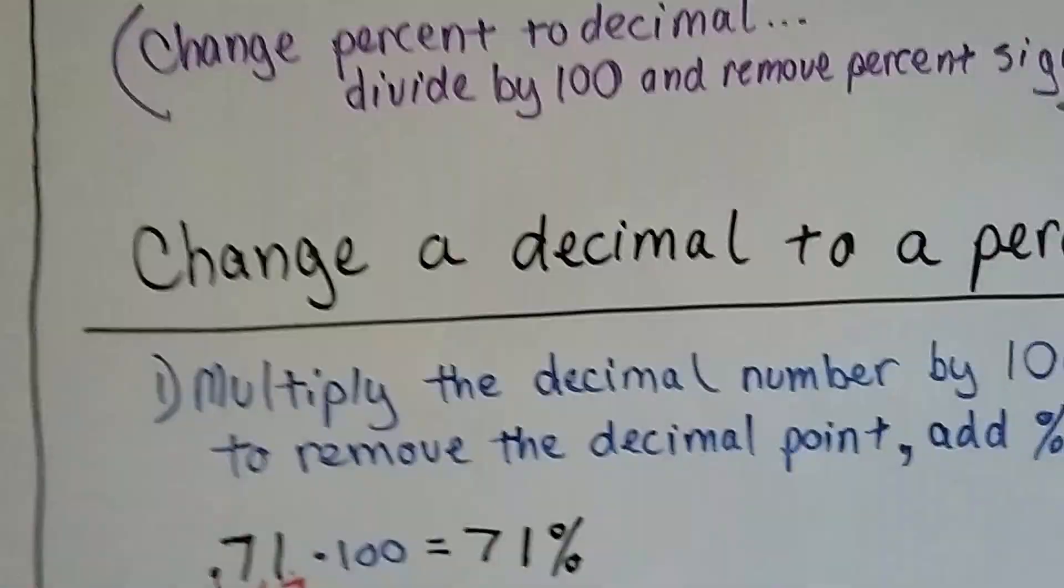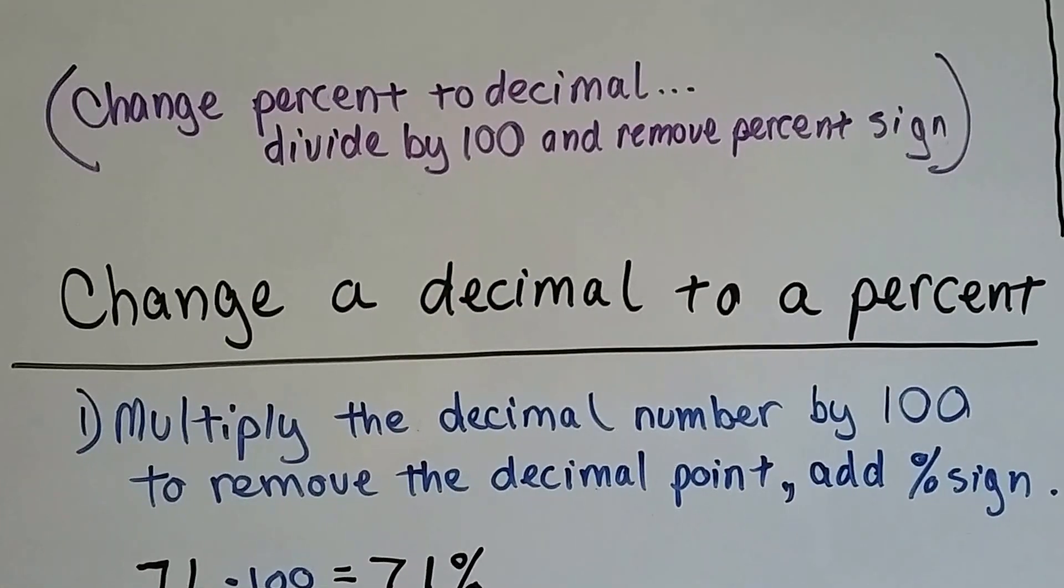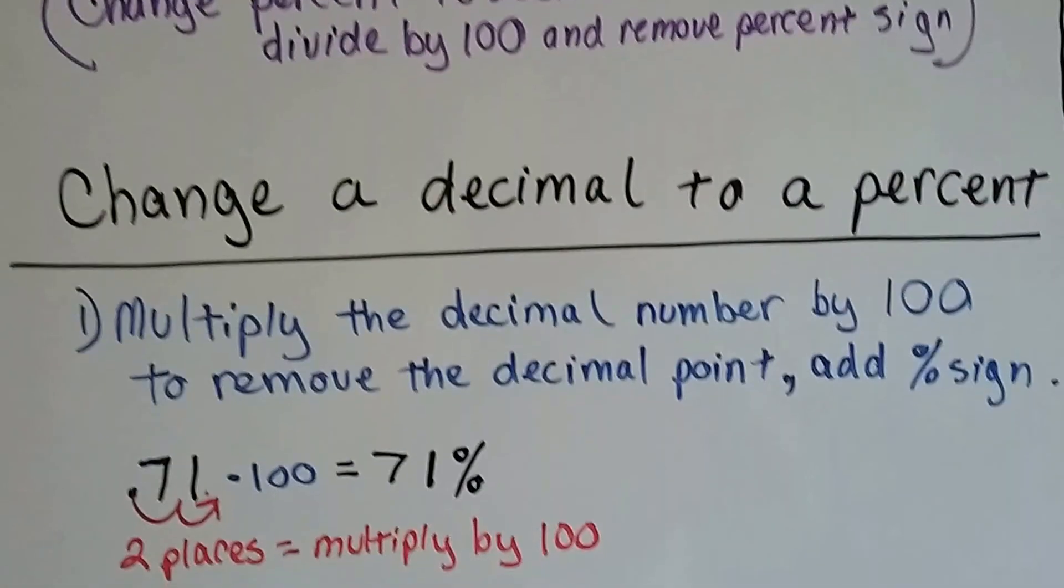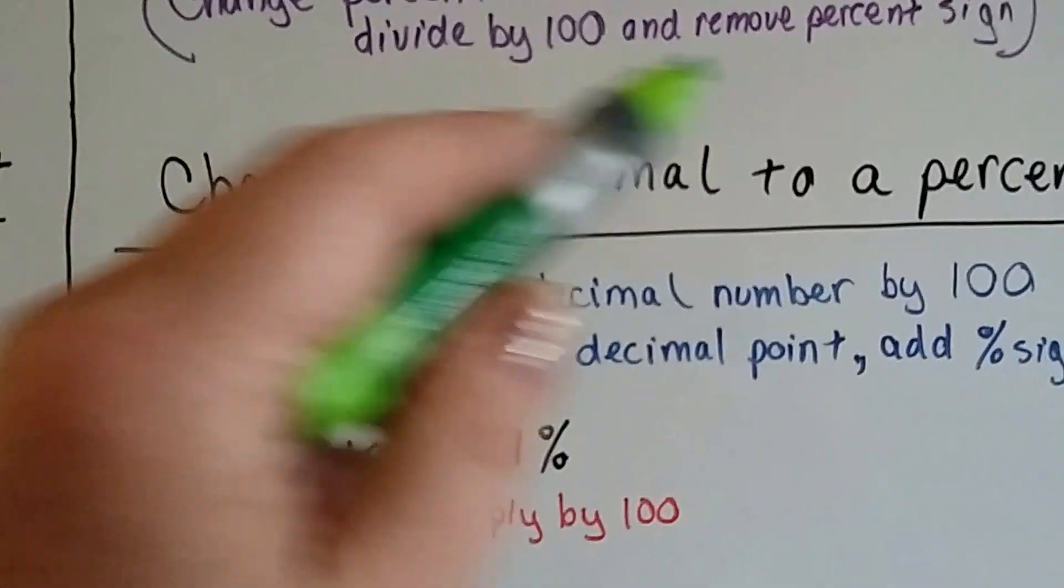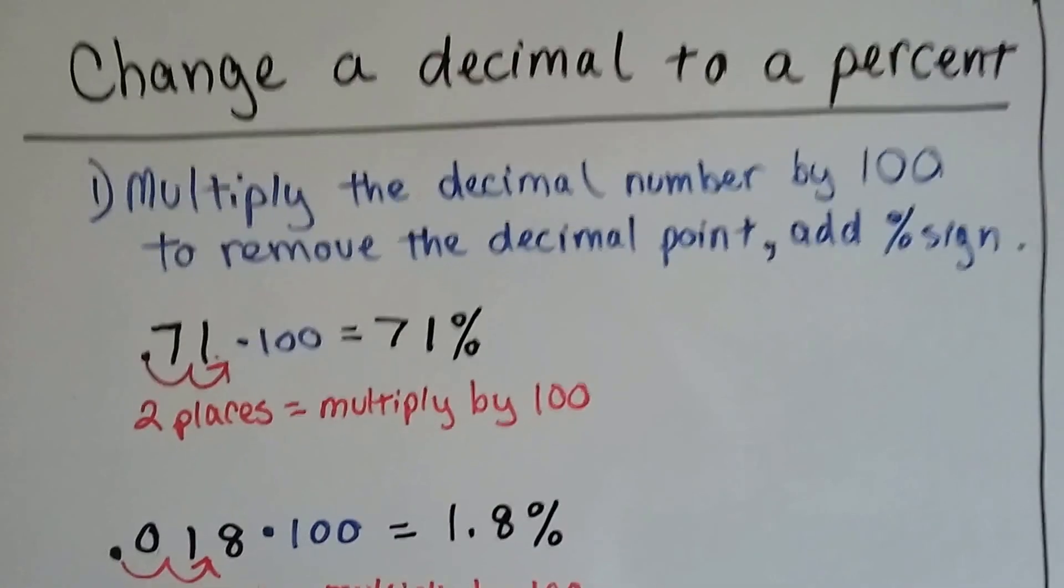When we change a percent to a decimal, we divide by 100 and remove the percent sign. But changing a decimal to a percent the other way around, this is percent to decimal. Now we're going to do decimal to percent. This is what we do.